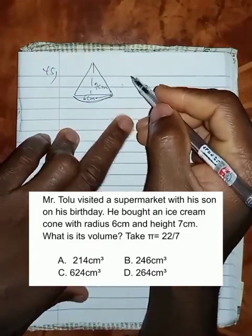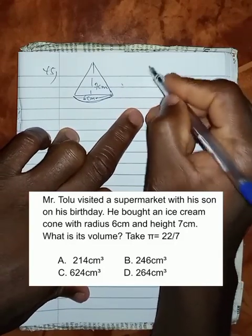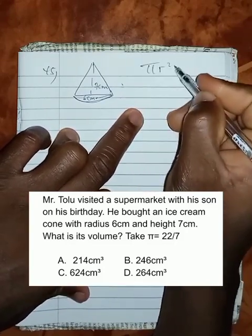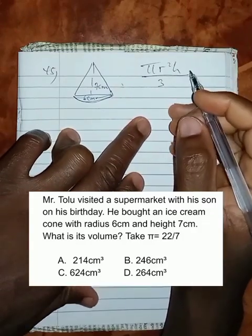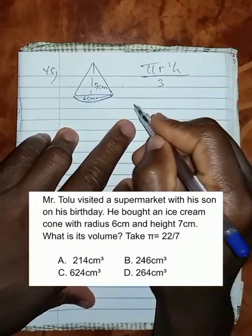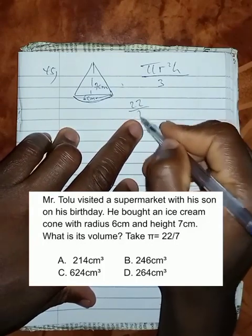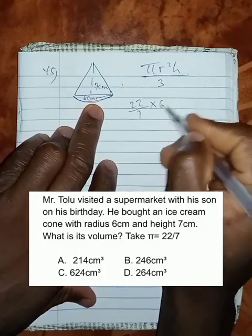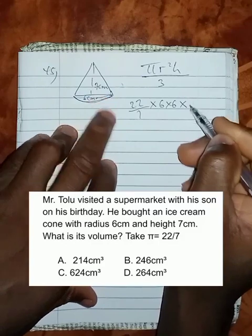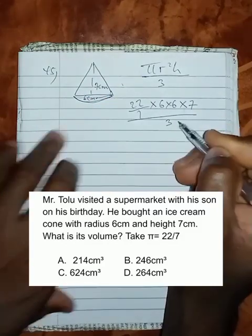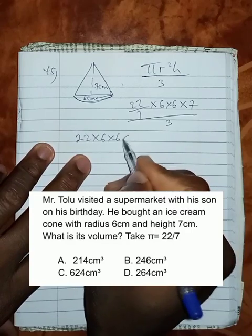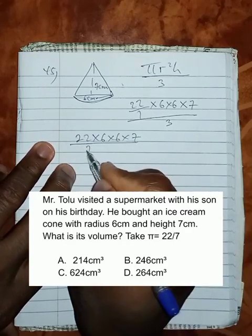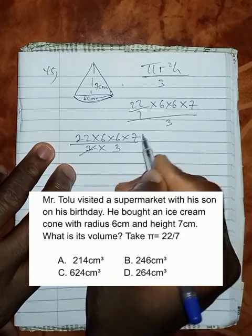The formula for finding the volume of a cone will be π R squared h over 3. We're asked to take π as 22 over 7. So this becomes 22 over 7 times radius squared would be 6 times 6 times height 7 over 3. You can write this as 22 times 6 times 6 times 7 over 7 times 3.